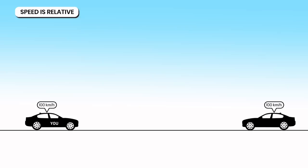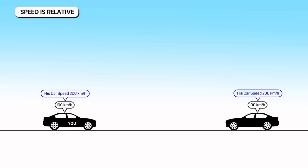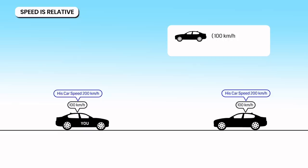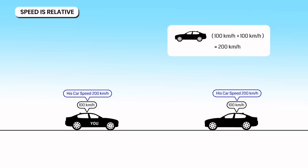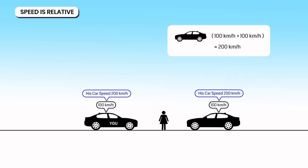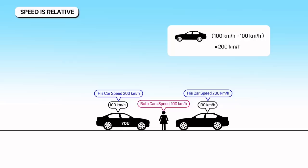We already know speed is relative, but this doesn't apply to the speed of light. For example, you are in a car at 100 kilometers per hour and your friend drives toward you at 100 kilometers per hour — you would measure each other's speed at 200 kilometers per hour. A stationary observer would measure each car at 100 kilometers per hour. Speed is relative and gives different values for different observers according to their motion.